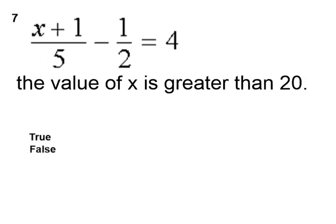And finally, question seven, x plus 1 over 5 or a fifth of x plus 1 minus 1 half is equal to 4. If you solve that equation or isolate for x, the value of x will be greater than 20. Is that true or false?